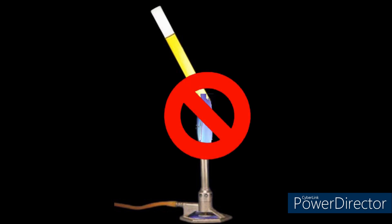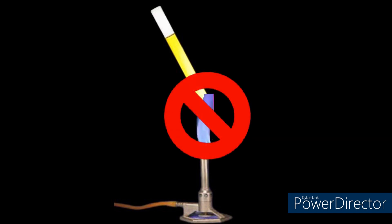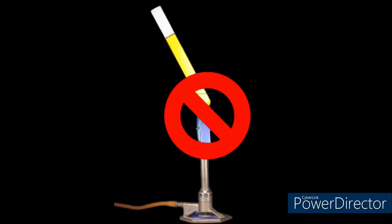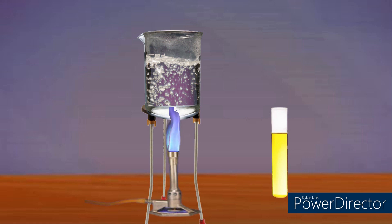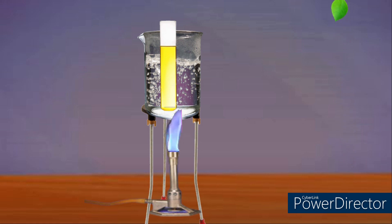Next, take alcohol in a test tube. Do not expose it directly to the flame as it is highly flammable, so heat the alcohol using the boiling water. Take out the water and put the leaves in the heated alcohol.